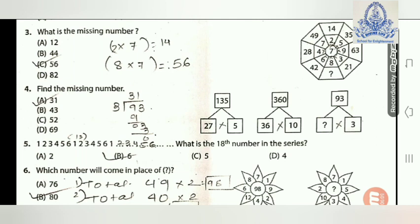Question 3: What is the missing number? In the right side picture, going clockwise, the center number is seven. Seven multiplied by two equals fourteen; seven multiplied by five equals thirty-five; seven multiplied by nine equals sixty-three; seven multiplied by three equals twenty-one. Now the next term: seven multiplied by eight equals fifty-six. So option C, fifty-six, is right.